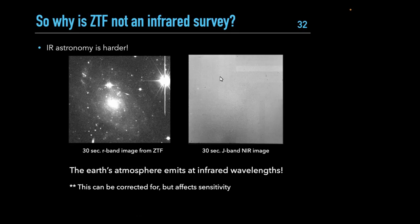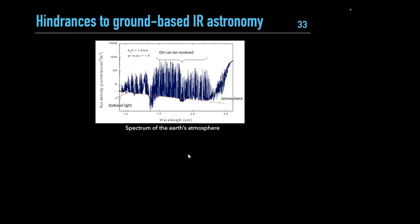That hazy background is actually the Earth's atmosphere emitting at infrared wavelengths. You can model and subtract this sky background in software to recover the image, but it significantly affects sensitivity — you need longer exposure times to reach similar depths in the infrared compared to the optical.